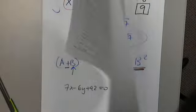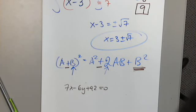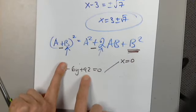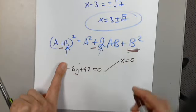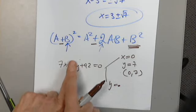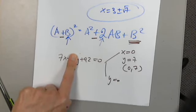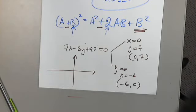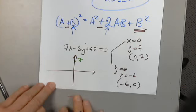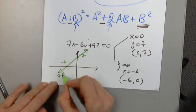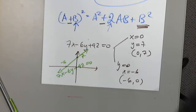Using intercepts to graph 7x minus 6y plus 42 equals 0. No need to solve for y or find the slope. Set x equal to 0: negative 6y equals negative 42, so y equals 7, giving point (0, 7). Set y equal to 0: 7x equals negative 42, so x equals negative 6, giving point (-6, 0). Plot these two points, connect and extend the line. That is the graph of 7x minus 6y plus 42 equals 0.